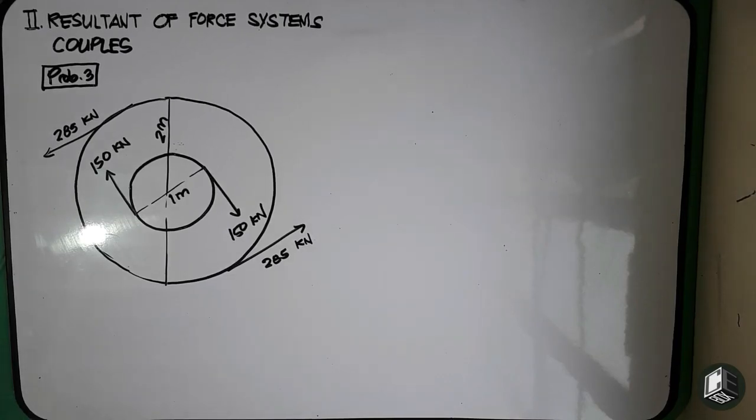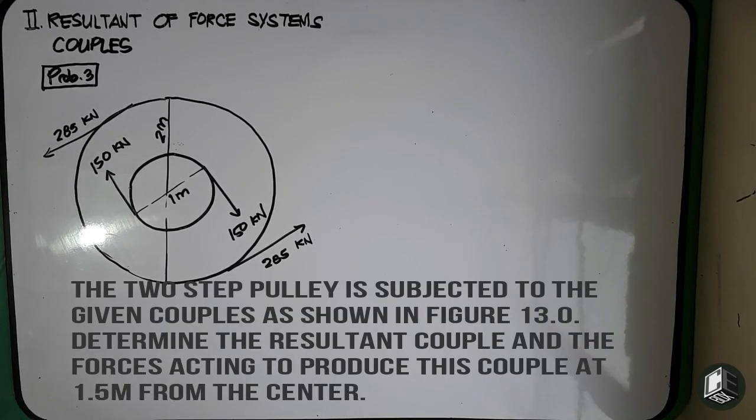So this is our problem number three for the topic of couples. The two-step pulley is subjected to the given couples as shown in figure 13.0. Determine the resultant couple and the forces acting to produce this couple at 1.5 meter from the center.